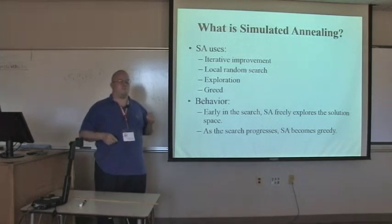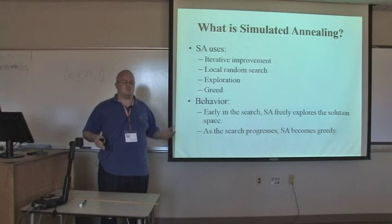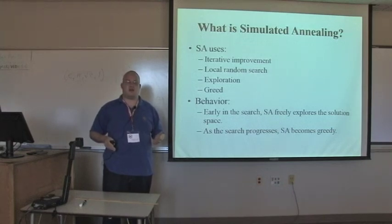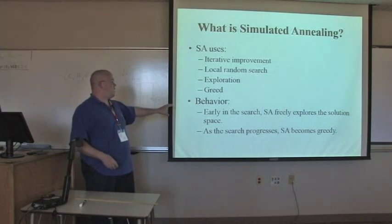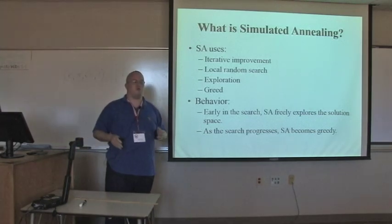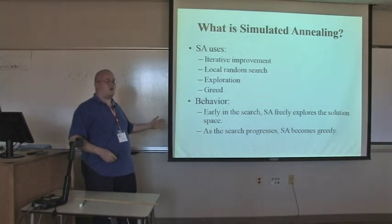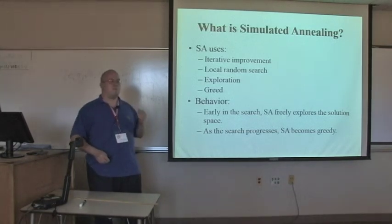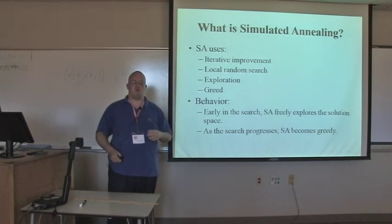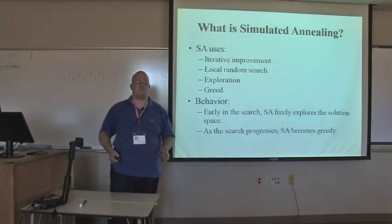And then greed. With greed, basically the simplest way to explain it is we're always picking something that's better. And the way the search algorithm behaves, early in the search we really explore more freely. We're willing to be wrong more often. We're willing to accept worse solutions or to look around more. But as the search progresses and we get closer and closer to approximating that global optimum, we start to become much greedier until we reach a point where we're basically not accepting anything that's not an improvement.